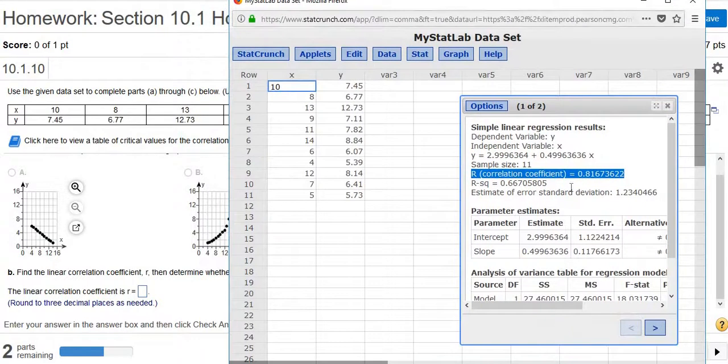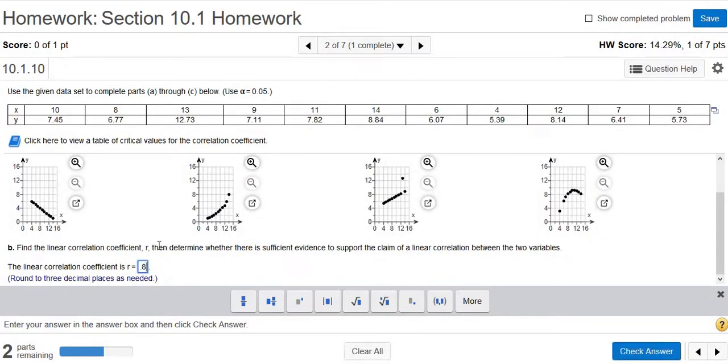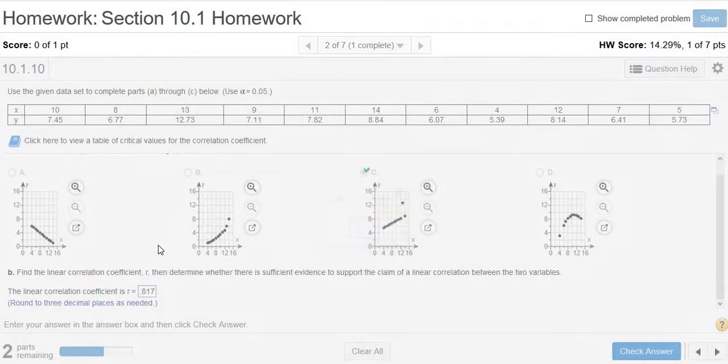So it wants three decimals, so it's going to be 0.817, 0.817. I'm going to type it in, 0.817. Good job.